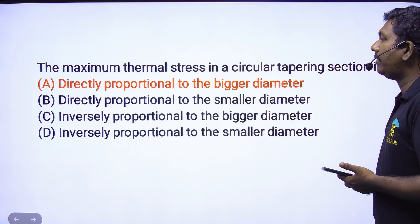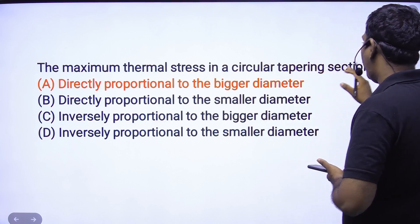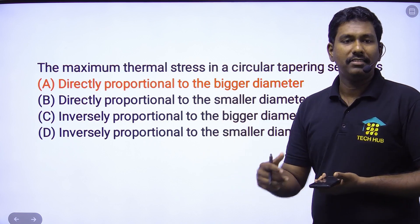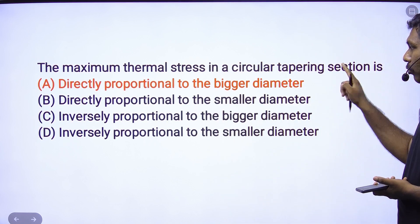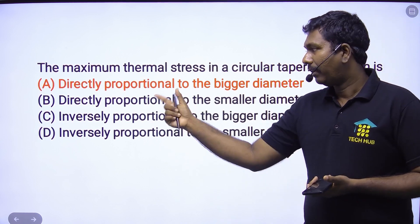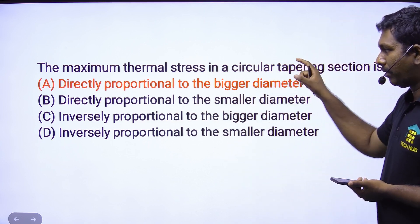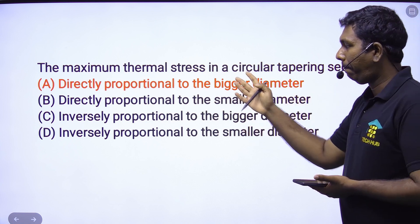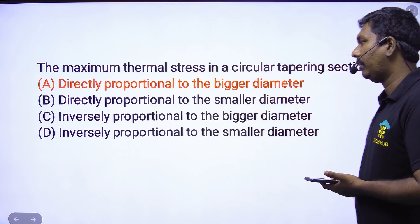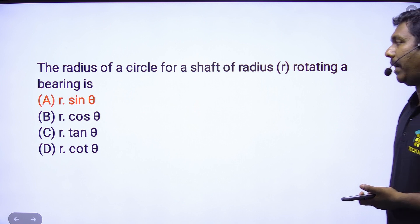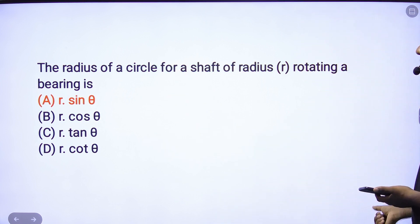Next: maximum thermal stress in a circular tapering section. There is confusion between option A and D. If you find the equation, there is a D and a D. We will find option A as the answer. For a shaft of radius R rotating, R sin theta is the answer — option A is the correct answer.